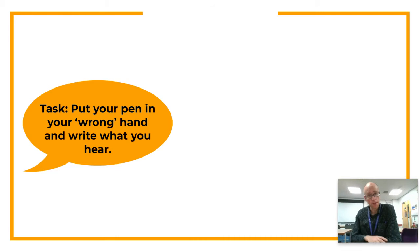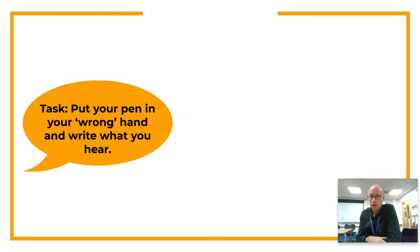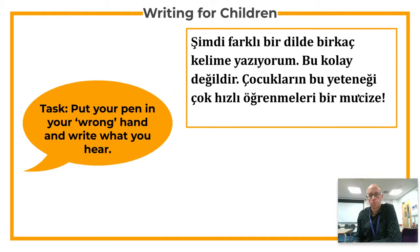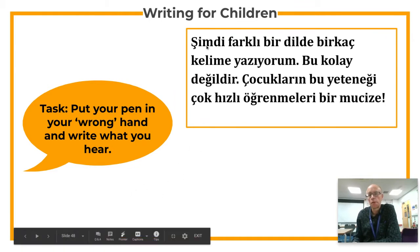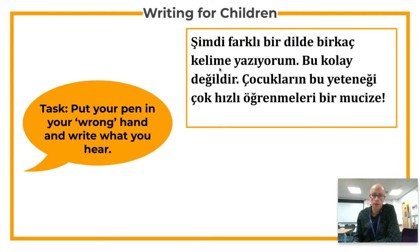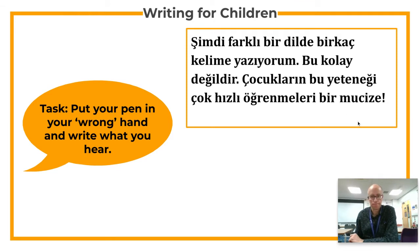Now, which language do you think I was speaking there? Not Russian, not Hungarian — it wasn't some kind of weird Darlington dialect. It was Turkish, and this is what it looks like on the page. Let me read it again: Şimdi farklı bir dilde birkaç kelime yazıyorum. Bu kolay değildir. Çocukların bu yeteneği. Çok hızlı öğrenmeleri. Bir mucize. Okay, so did you get those word breaks? And did you manage to represent some of these words in some kind of reasonable form?